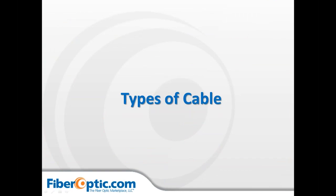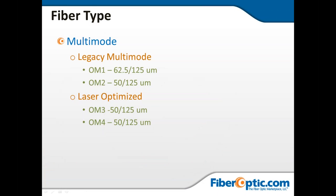Now we're going to go over some types of cables. When we talk about cable, you're really talking about the glass inside — that's where the specifications and requirements are based. On the outside, the jacketing, strength members, and Kevlar surrounding the glass make it rated for different applications. We have legacy multimode — OM1 and OM2 — which is standard multimode glass. Then you move up to laser-optimized OM3 and OM4, where the glass was refined to work better with lasers, optimizing it for transmitting at different wavelengths and further distances.